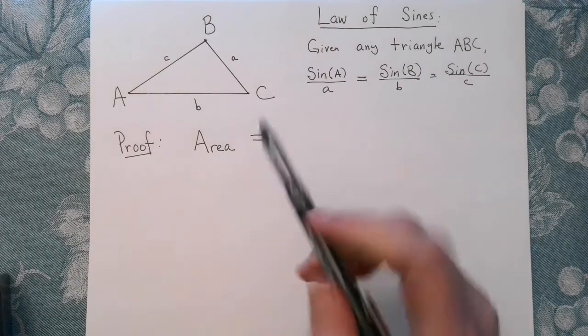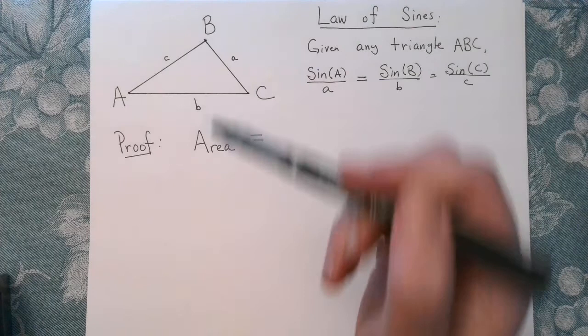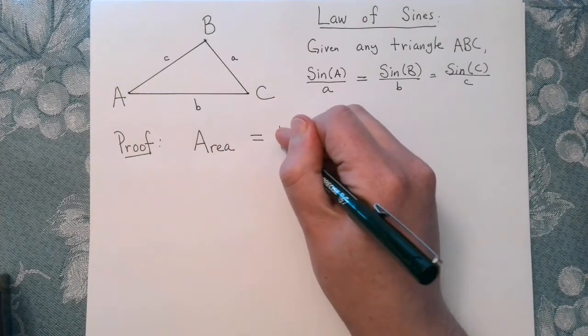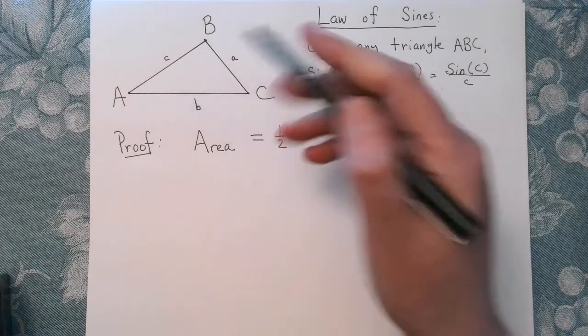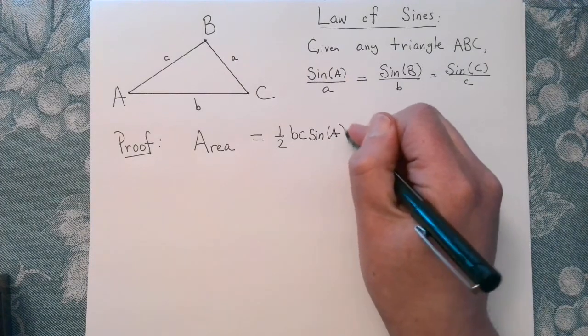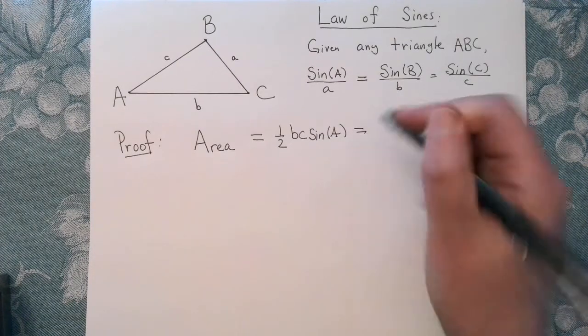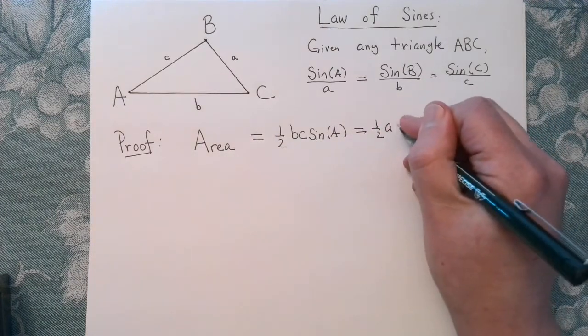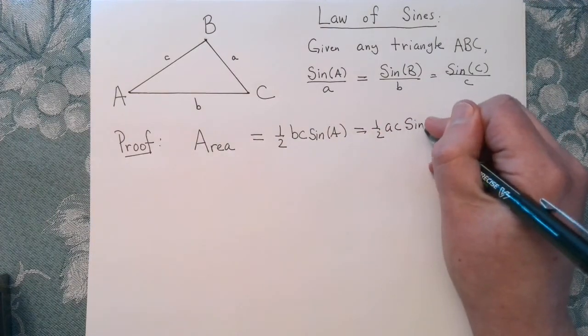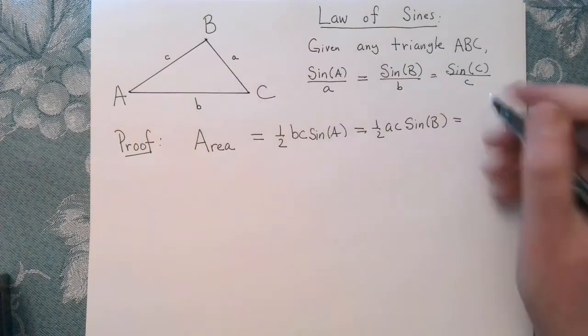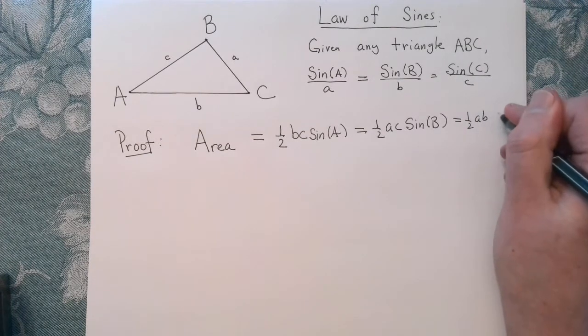So the area, we can define this in three ways. We just need a pair of side-angle-sides. So we know that the area is equal to one-half. We could say b times c times the sine of the angle in between. Well, that's also equal to one-half AC times the sine of the angle in between. And that's also equal to one-half AB times the sine of the angle in between.